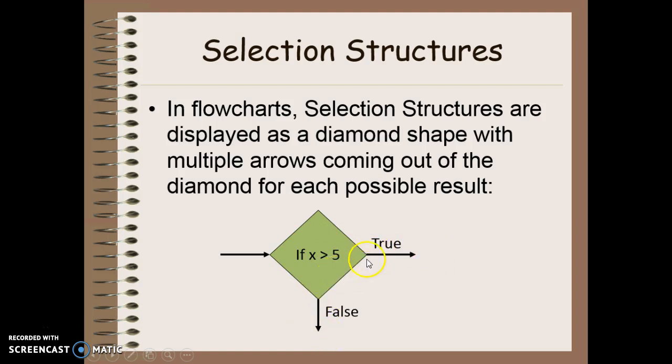So now our program can either go this direction if that statement is true, or it could go this direction down here if that statement is false.